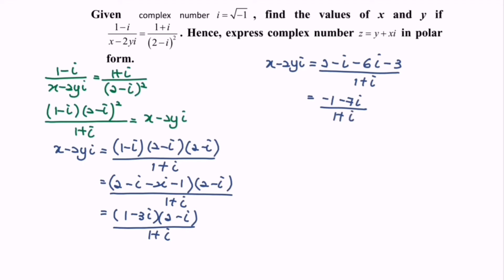Next I'm going to rationalize the denominator. Multiply by the conjugate — the conjugate for 1 plus i is 1 minus i, so multiply by 1 minus i over 1 minus i.